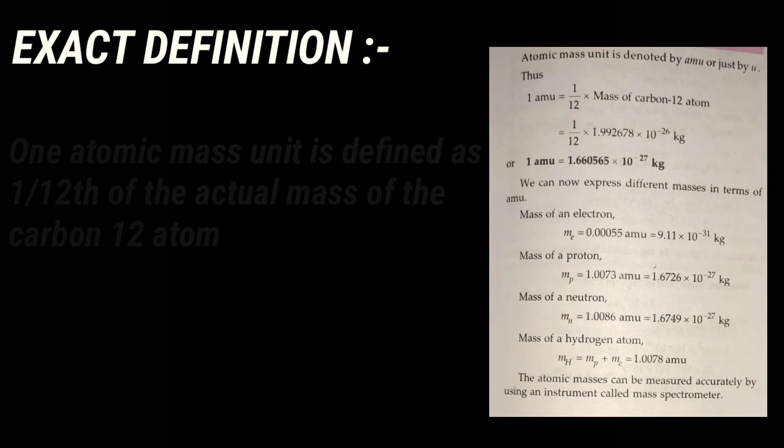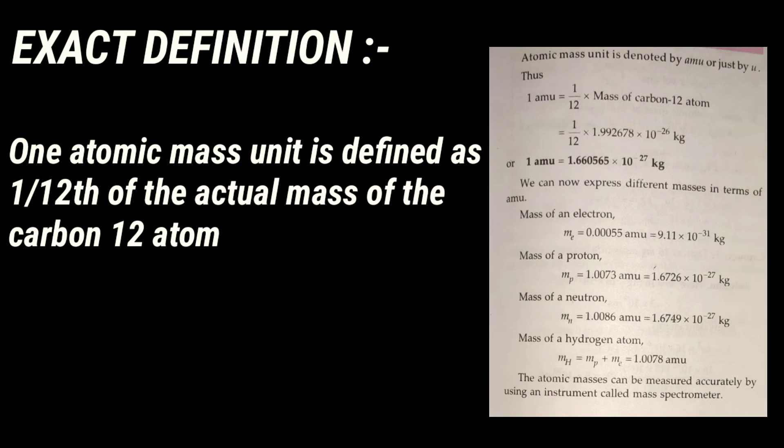Exact definition: one atomic mass unit is defined as 1/12th of the actual mass of the carbon-12 atom.